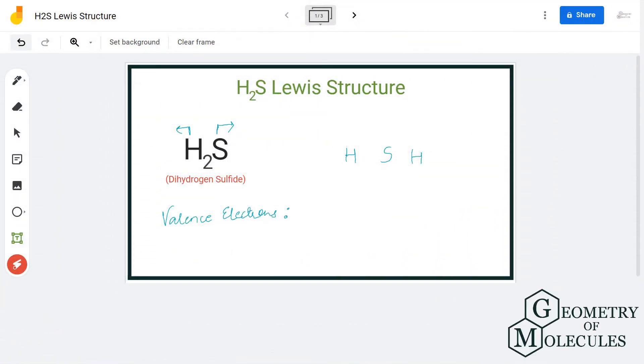Hi guys, today in this video we are going to look at the Lewis structure and total number of valence electrons for H2S. It's a chemical formula for dihydrogen sulfide. In this video we'll first discuss the total number of valence electrons in this molecule followed by its Lewis structure.